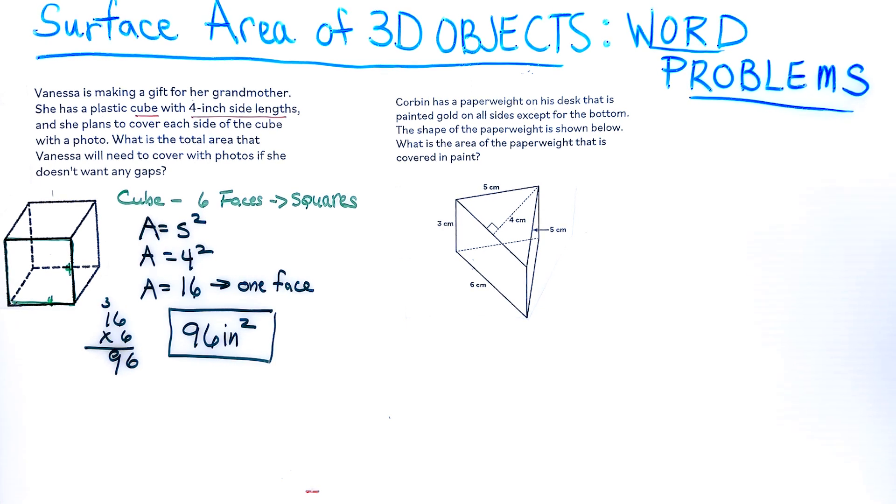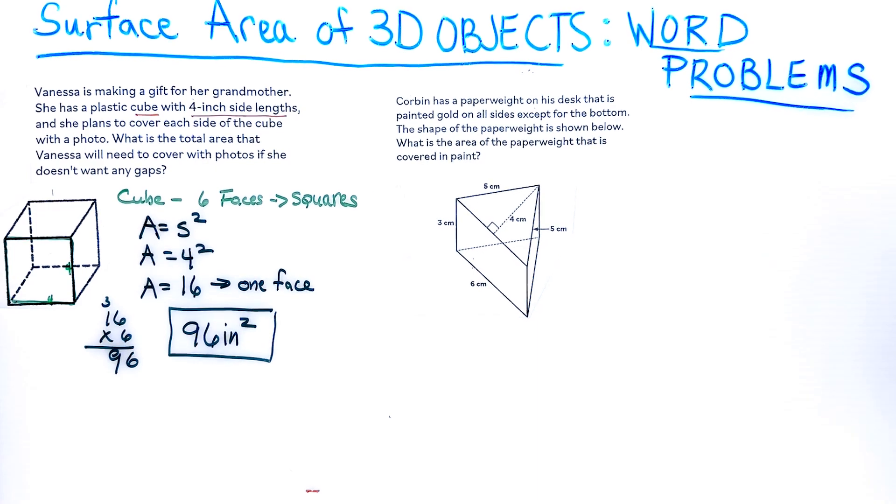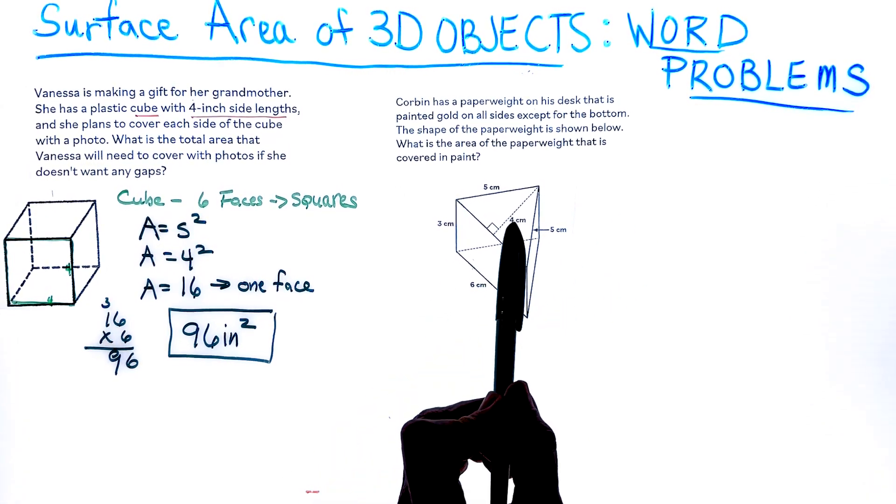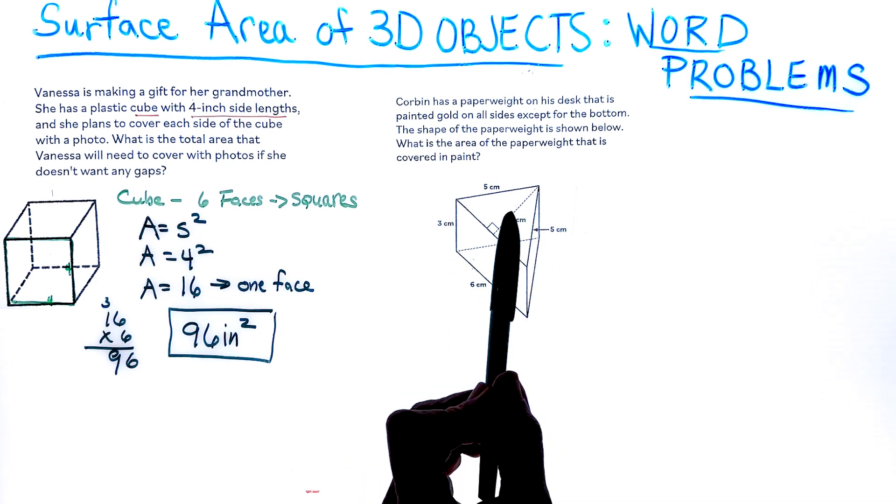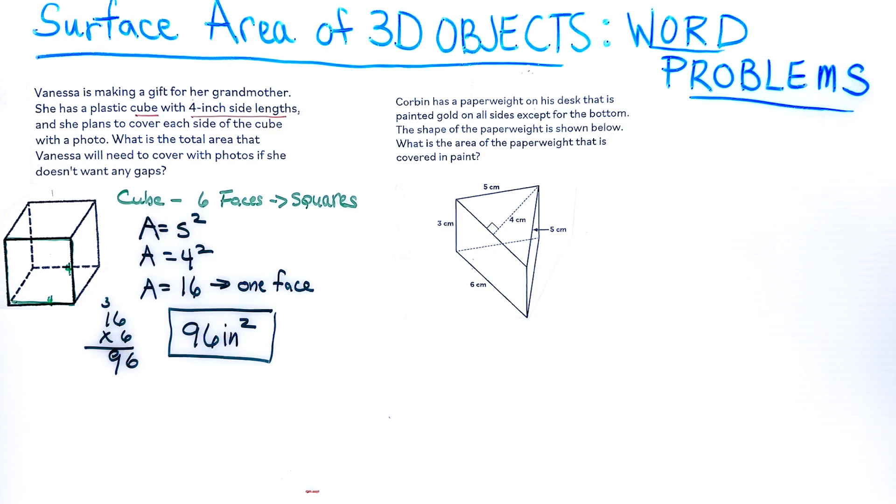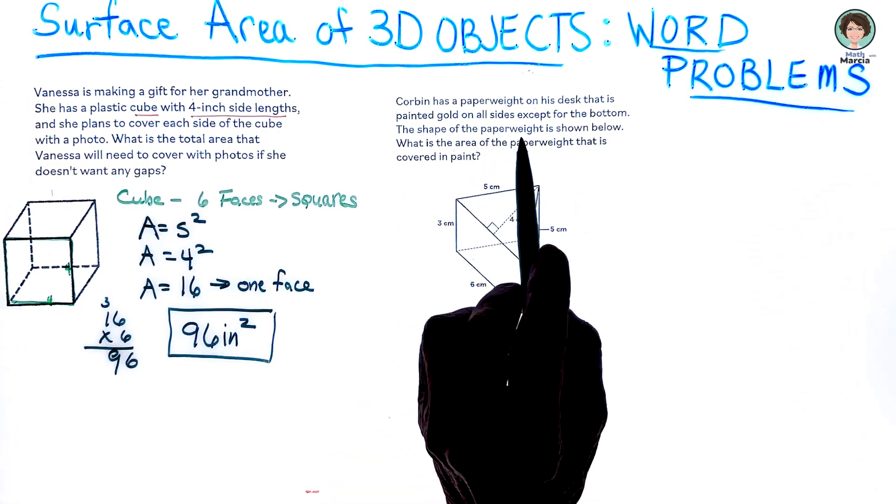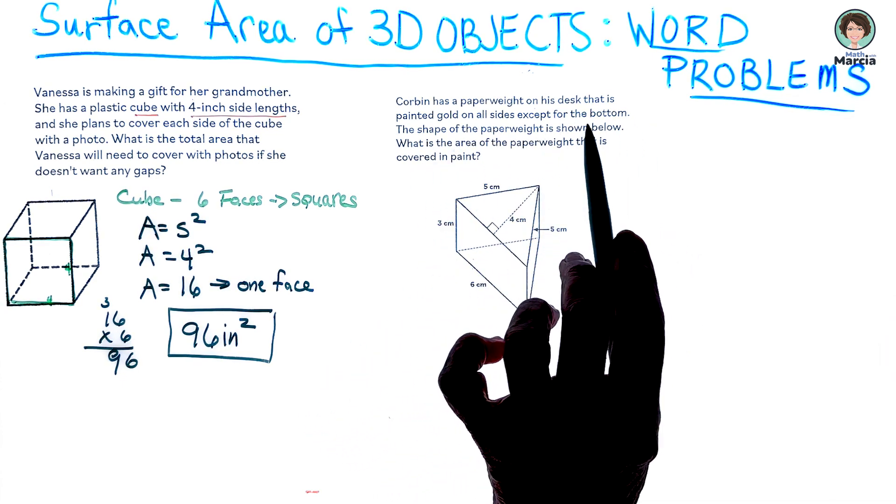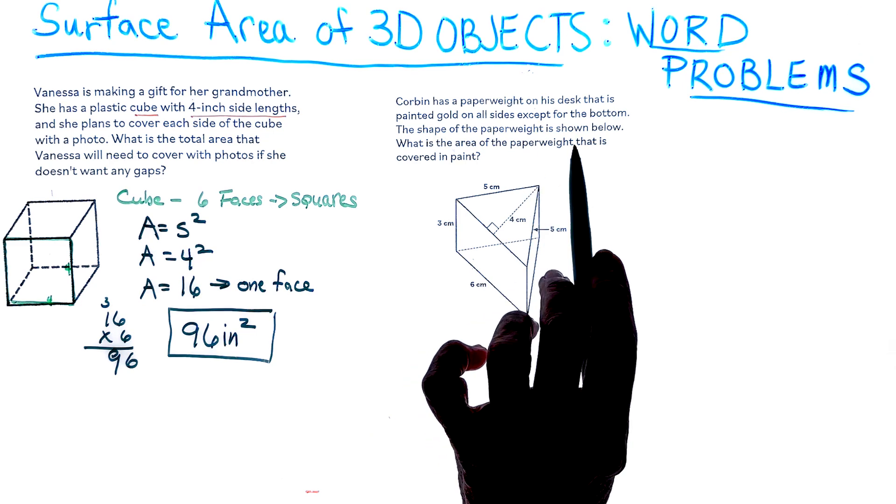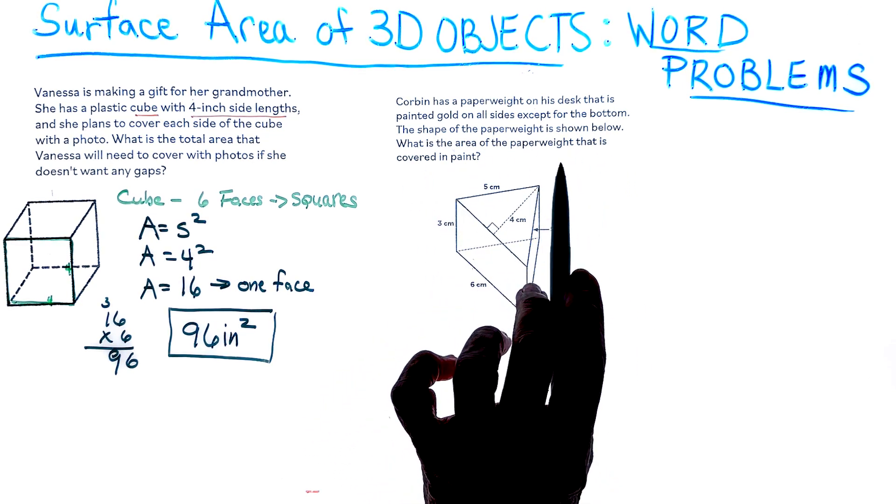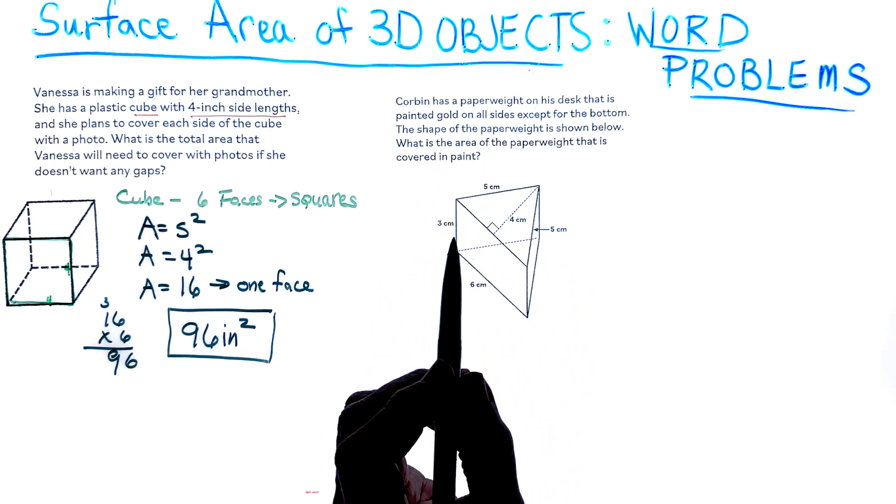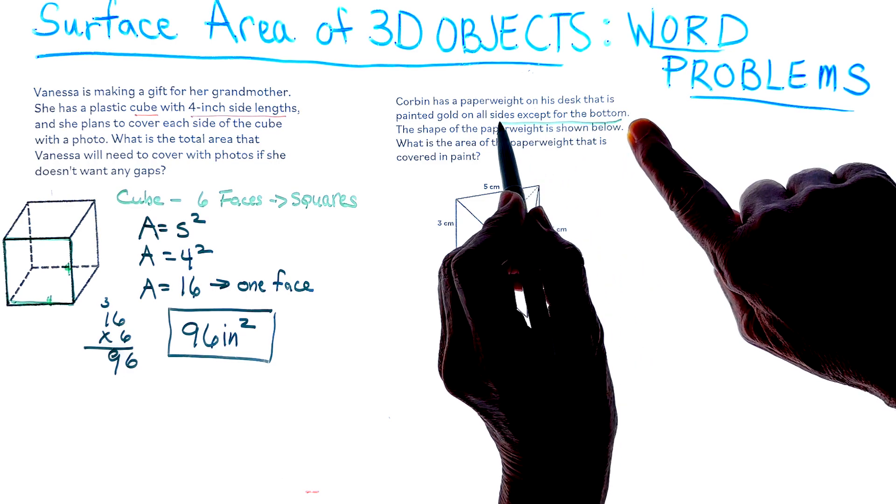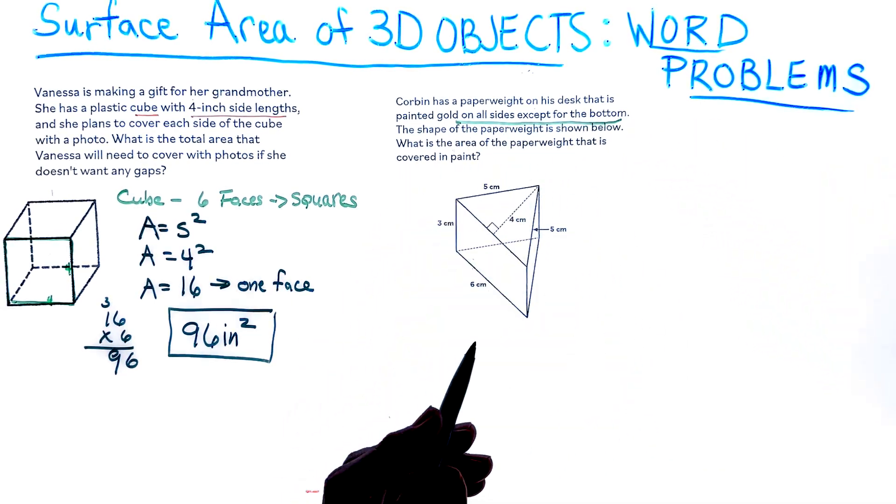That one was not too bad. Let's look at the next problem. I think it's going to be multi-steps because it's not a cube. What shape is that? It's a triangular prism because I see it has a top and a bottom, those two bases that are both triangles. Corbin has a paperweight on his desk that is painted gold on all sides except the bottom. What is the area of the paperweight that is covered in paint?